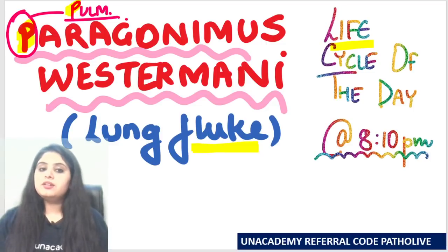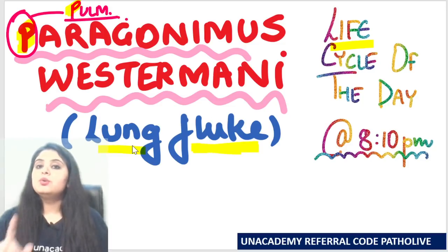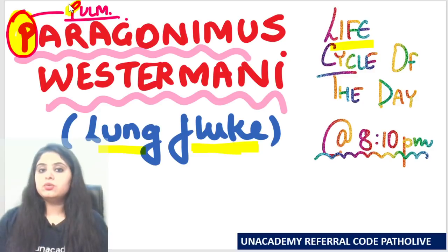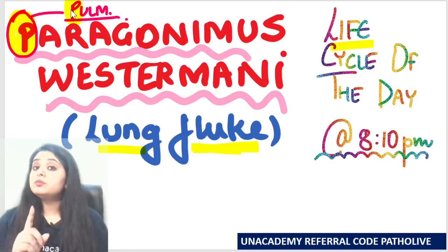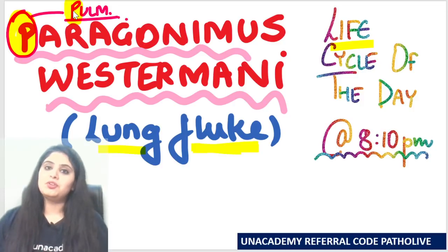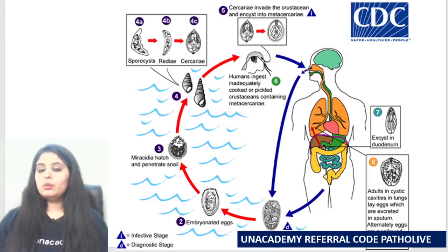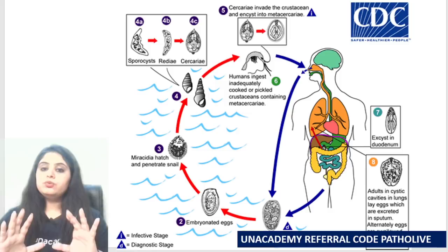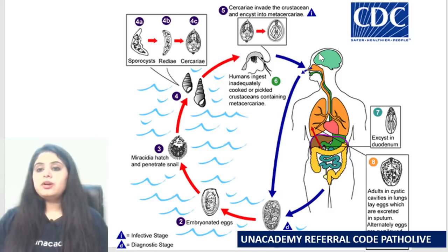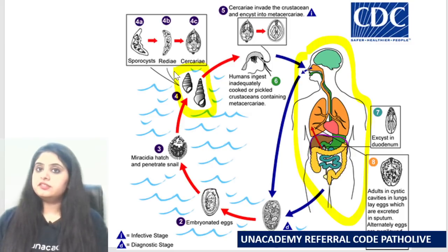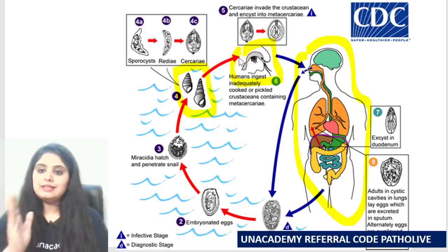Let's start with the life cycle of the day — Paragonimus westermani. It's a trematode, it's a fluke, but I call it a lung fluke, which gives you the first mnemonic: Paragonimus has 'P' for pulmonary involvement, so sputum examination is going to be very important. The hint to crack any life cycle is to pick up the hosts. Here I clearly see three: a human, a snail, and a crayfish or crab — so it's a three-host life cycle.